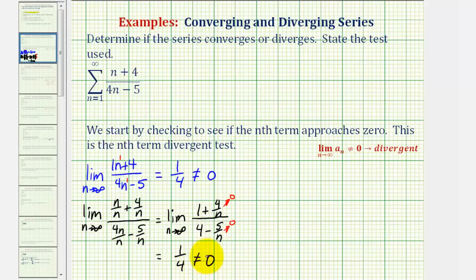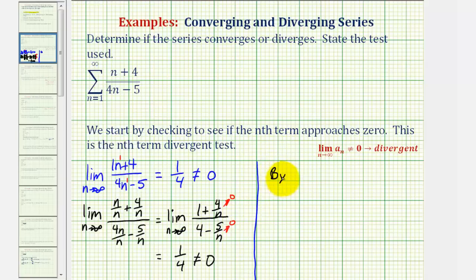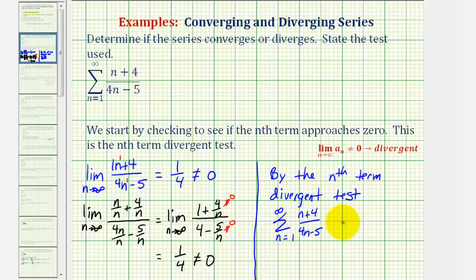And again, this doesn't equal zero. So our conclusion is, by the nth term divergent test, the infinite series diverges.